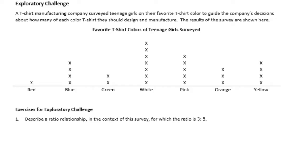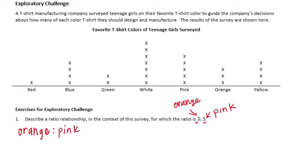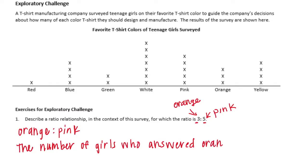We're looking for something that has 3 plotted on the line plot and something that has 5. Red only has 1, blue has 4, green has 2, white has 7, pink has 5 — so pink could be that one. Orange has 3 — so orange could be the other. So our ratio relationship would be orange and pink: the number of girls who answered orange to the number of girls who answered pink.